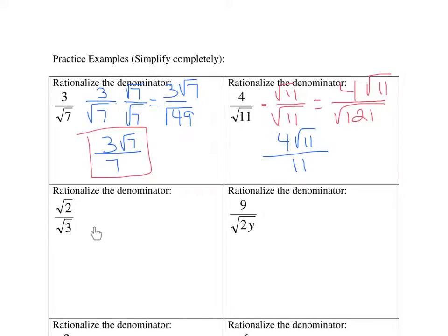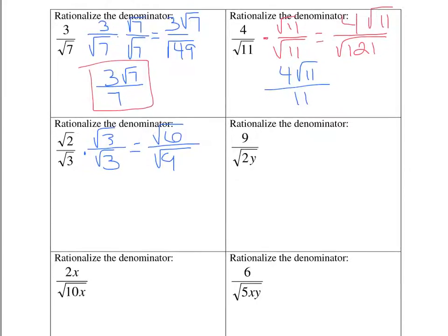In this question, I want to get rid of the square root of 3, so I'm going to multiply the numerator and the denominator by the square root of 3. The square root of 3 times the square root of 3 is the square root of 9. This one is a little different because both are under the radical, so the square root of 2 times the square root of 3 is the square root of 6, which does not simplify — but the square root of 9 does. So we end up with the square root of 6 over 3.